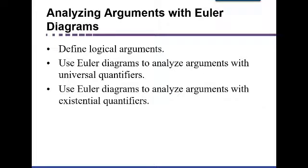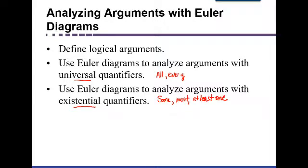There are two types of Euler diagrams that we're going to set up. Those that involve arguments with universal quantifiers — words like 'all' or 'every' that describe a characteristic of every object or person in the set. And then there are existential quantifiers, for which we'll also be making Euler diagrams. Existential quantifiers just guarantee that at least one exists — sometimes we use the words 'some,' 'most,' or 'at least one.' These diagrams will look a little different to represent different scenarios.